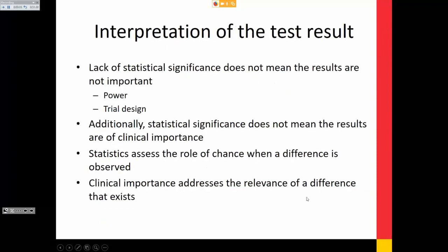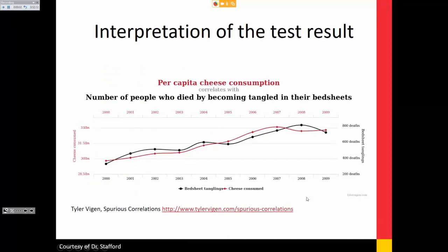Interpretation of test results: lack of statistical significance does not mean the results aren't important. And statistical significance does not mean the results are clinically important. Clinical importance addresses the relevance of a difference that exists. Be careful of inferences — per capita cheese consumption is highly correlated with the number of people who died tangled in their bedsheets. That's a spurious correlation, illustrating why we must be careful about the inferences we draw.